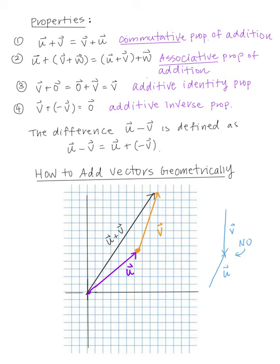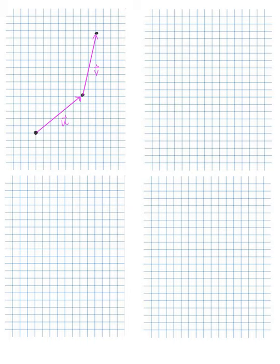Let's look at some examples. Here are two given vectors U and V. Make sure they're pointing in the same direction — in this case they are. Starting from the very bottom of U, go straight up to the terminal point of V. This vector here is denoted by U plus V.